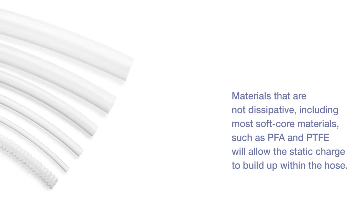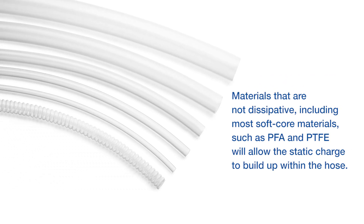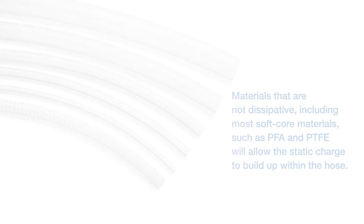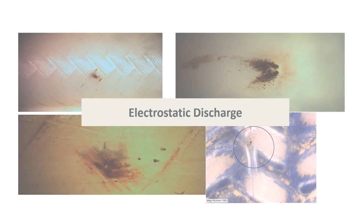Materials that are not dissipative, including most soft core materials such as PFA and PTFE, will allow the static charge to build up within the hose. This kind of buildup can cause a tiny hole in the hose to develop, resulting in a hard-to-detect system fluid leak and providing a path for any pent-up static electricity to jump to the closest conductive material. Any size hole creates a hazard in environments using toxic or combustible gases or liquids.